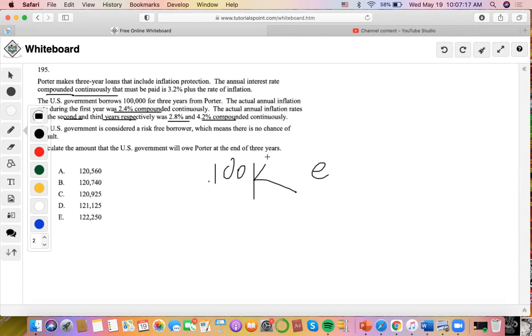So in order to find out how much money the government owes Porter at the end of three years, we will have to compound the amount of money that the U.S. government borrows from Porter. So it's 100K, right?